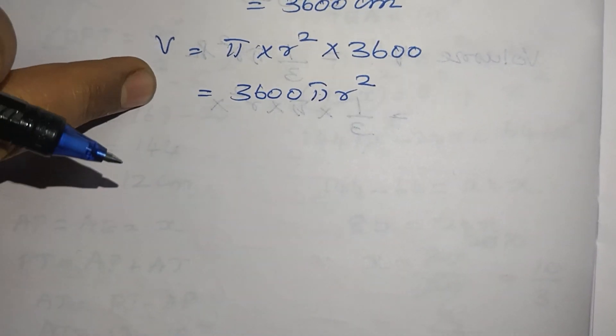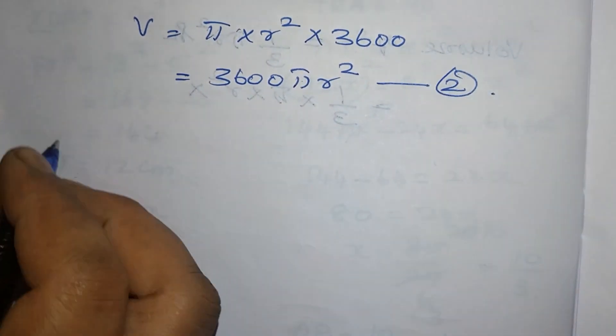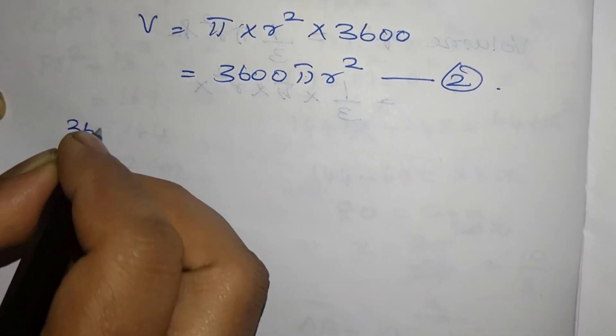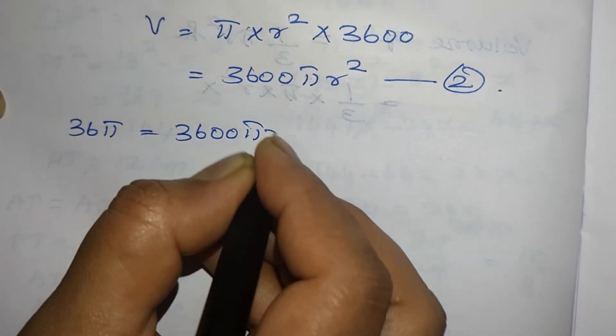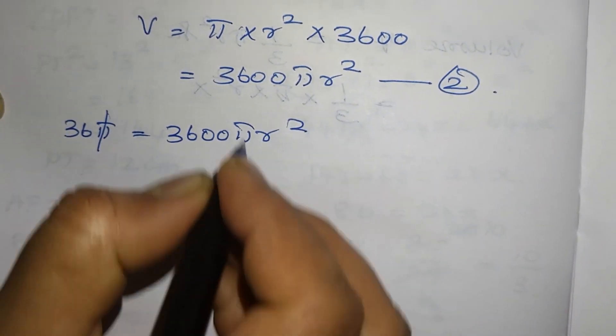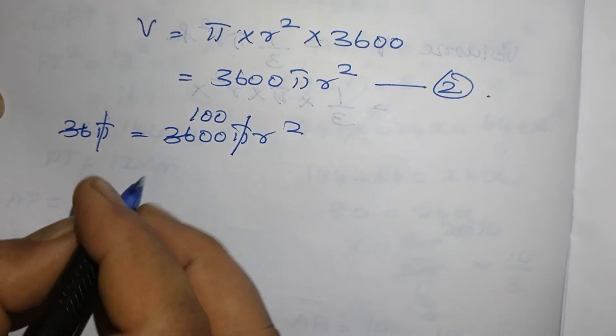Now this sphere is melt into this wire of cross section therefore this volume is equal to this volume. So 1 equal to 2. So 36 pi equal to 3600 pi r square. Now here pi pi get cancelled then 36 also get cancelled then 100.